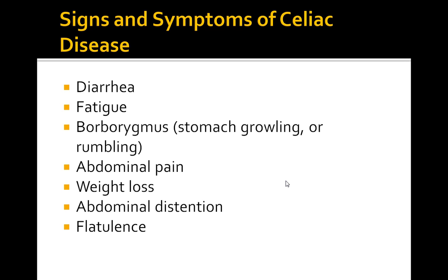What are some of the clinical features of celiac disease? Diarrhea is the most common symptom. Patients also present with fatigue, stomach growling and rumbling, abdominal pain, weight loss, abdominal distension, and flatulence. Pediatric patients commonly have failure to thrive, in addition to being irritable.